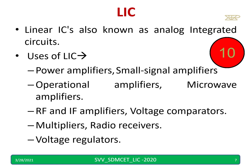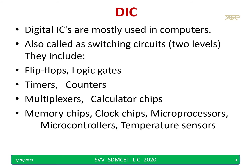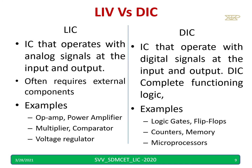Linear ICs are also known as analog integrated circuits. Uses of LICs include power amplifiers, op amps, RF and IF amplifiers, and voltage regulators. Digital ICs are mostly used in computers. Examples include flip-flops, logic gates, timers, counters, and multiplexers. All these are digital ICs.